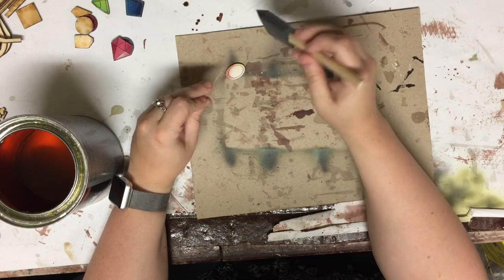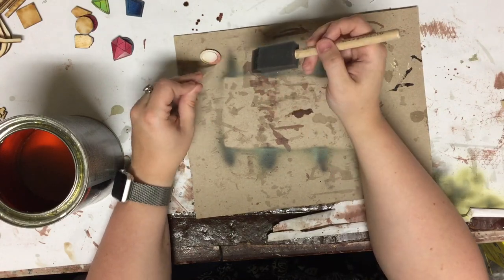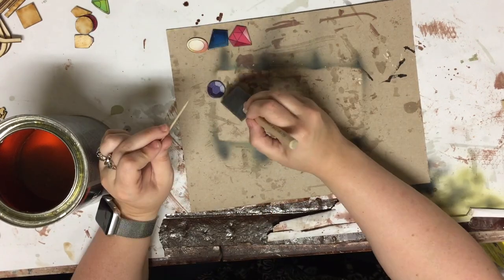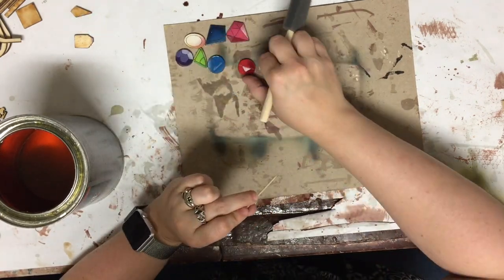And on to the gems. I'm using a toothpick here to hold the gems in place on the table while I apply the polyurethane. This way I'm not going to risk getting my fingerprints onto things while I hold them still.